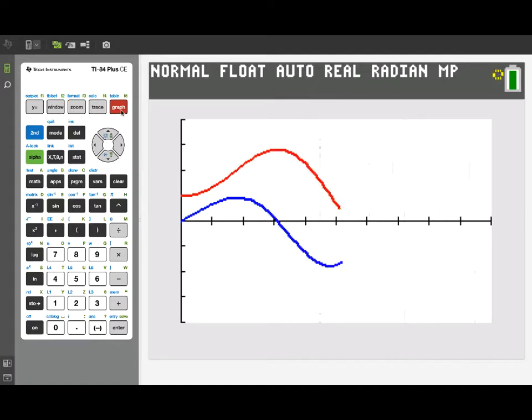Now what we're seeing here is our original velocity function in blue, and now we have a position function in red. So the red graph represents the position function, which is telling us exactly where the moving object is at on a straight line at time t.